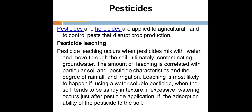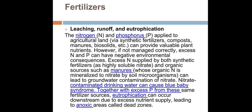Regarding pesticides, leaching occurs when pesticides mix with water and move through the soil, ultimately contaminating groundwater. For fertilizers, leaching, runoff, and eutrophication occur when nitrogen and phosphorus are applied to agricultural land via synthetic fertilizers or compost.